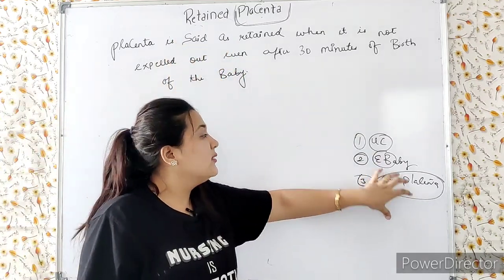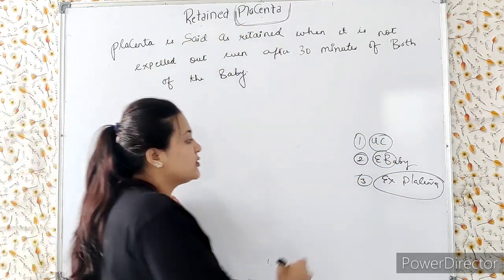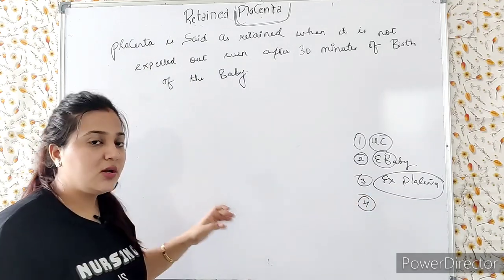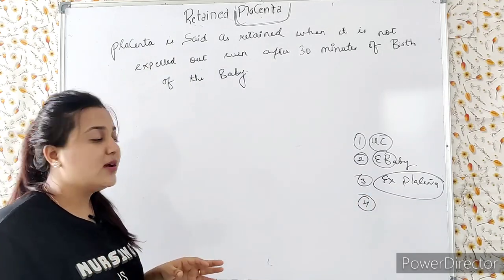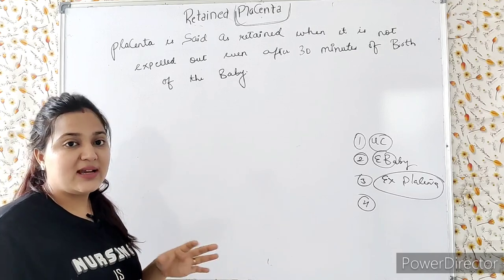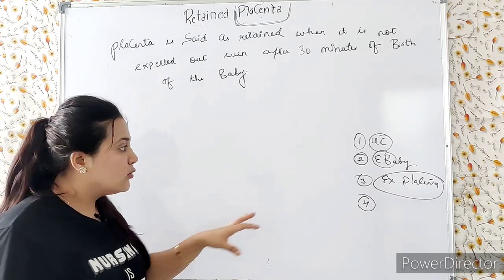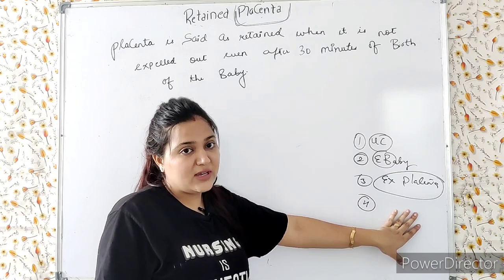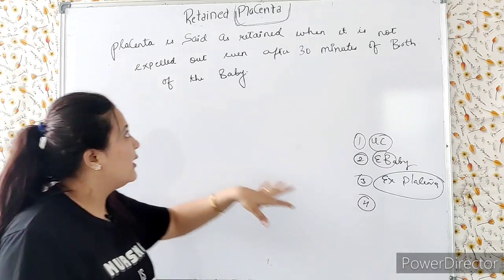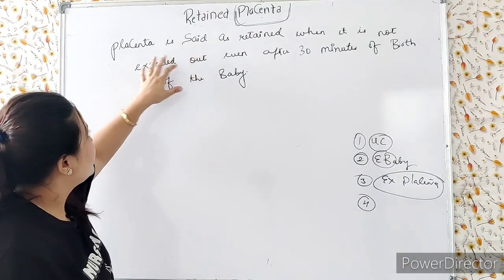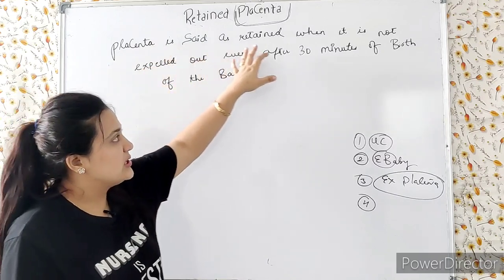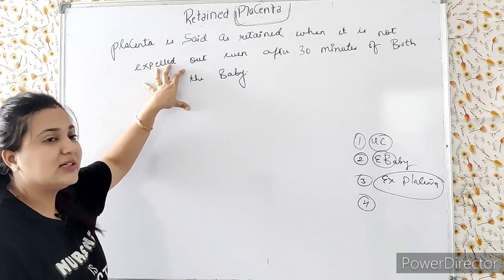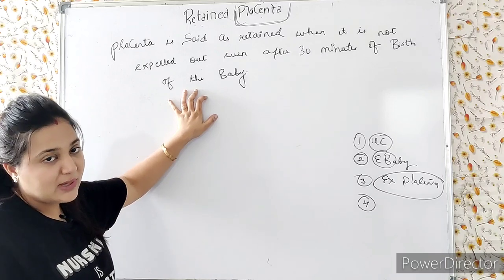After placental expulsion, there is a recovery phase where all vital signs are stabilized — we call this the 4th stage of labor. Placenta is said to be retained when it is not expelled out even after 30 minutes of birth of the baby.